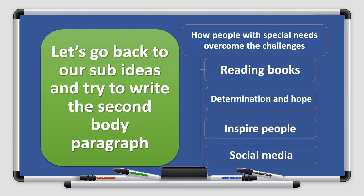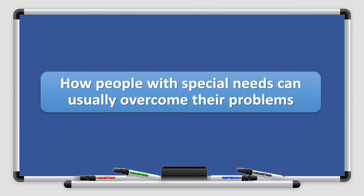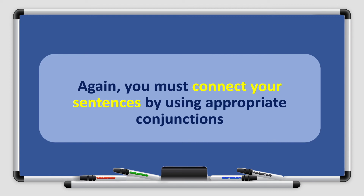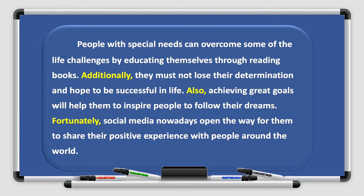Now let's write the second body paragraph: how people with special needs can usually overcome their problems. You must connect your sentences using appropriate conjunctions. People with special needs can overcome some of the life challenges by educating themselves through reading books. Additionally, they must not lose their determination and hope to be successful in life. Also, achieving great goals will help them to inspire people to follow their dreams. Fortunately, social media nowadays opens the way for them to share their positive experiences with people around the world.